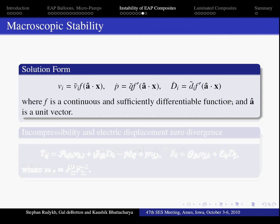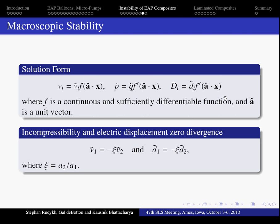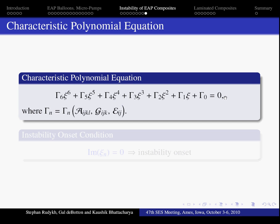We assume the solution of this form, substitute it into the governing equation and we use the compressibility constraint. And we get the polynomial equation, where the coefficients are functions of electro-elastostatic moduli.